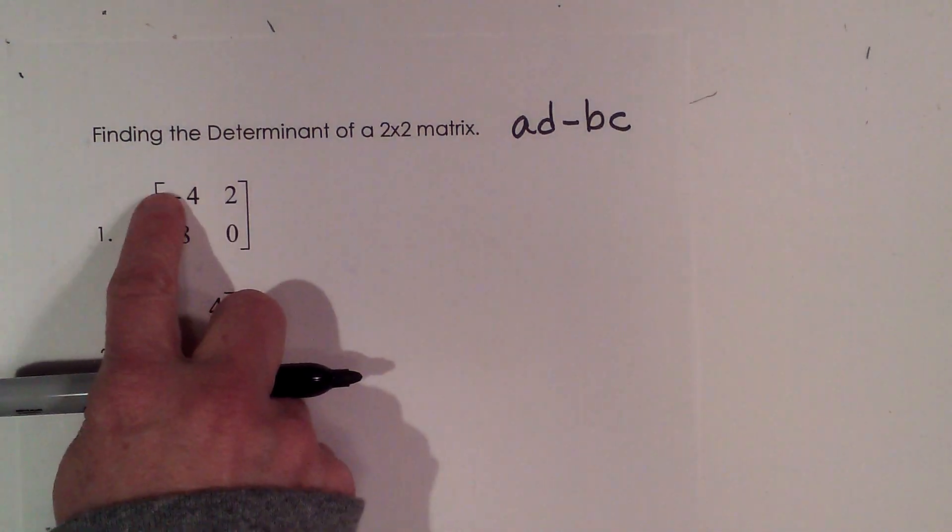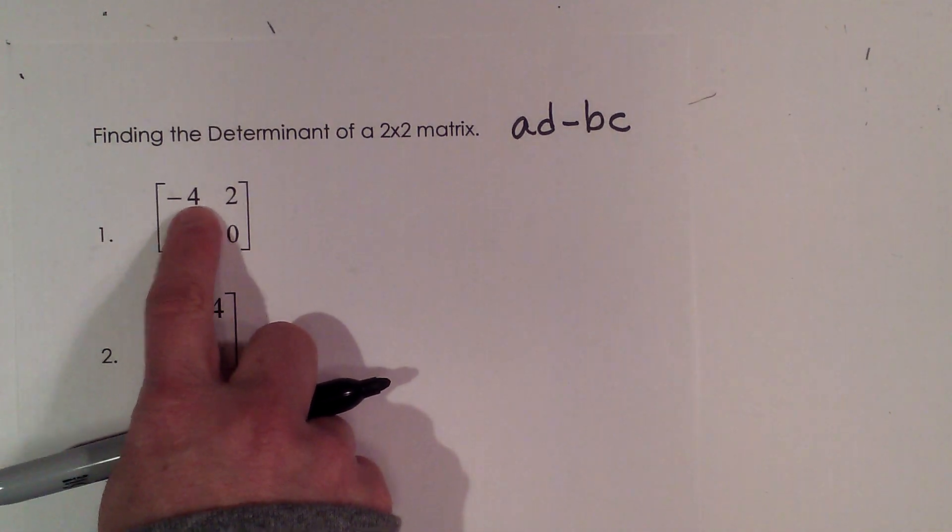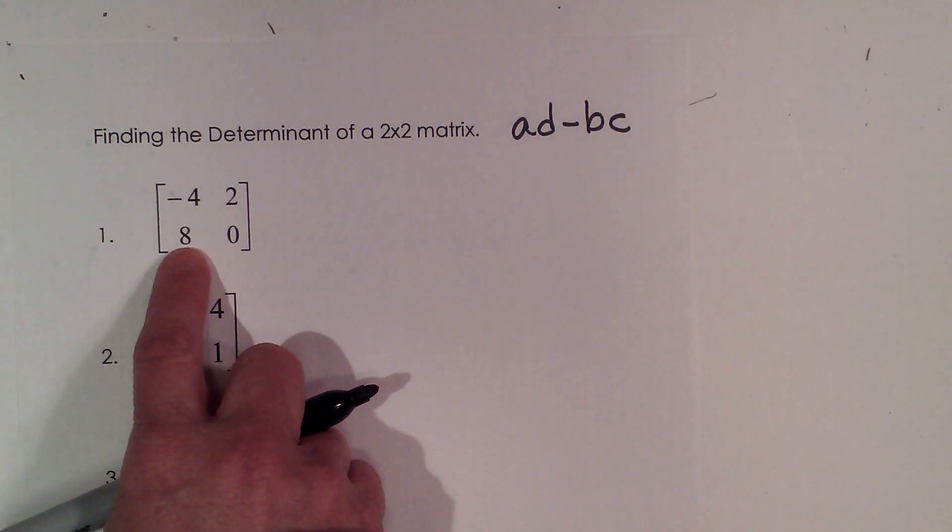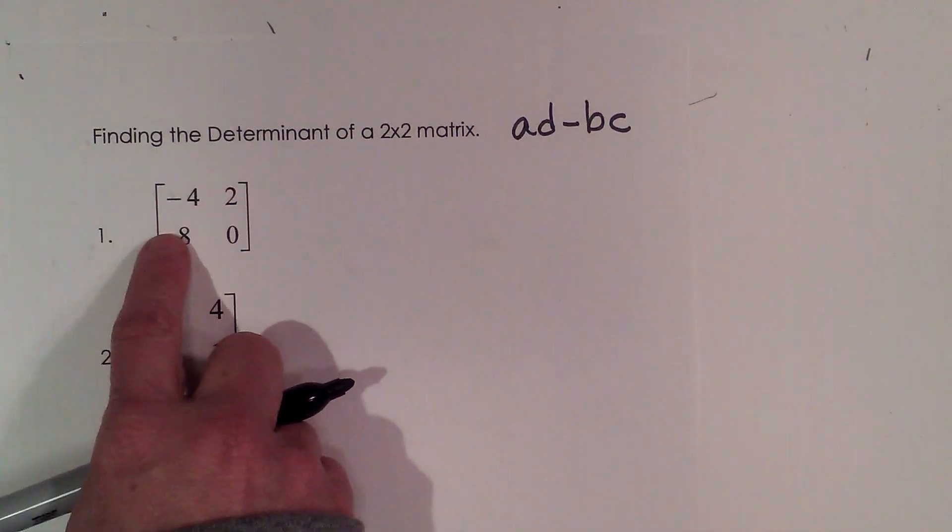Now where it comes from are the positions within the matrix. Negative 4 is a, positive 2 is b, 8 is c, and 0 is d. So it's a, b, c, d.